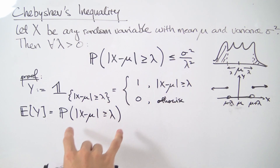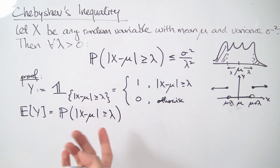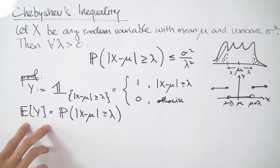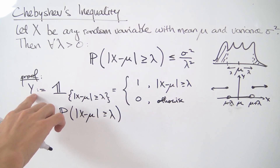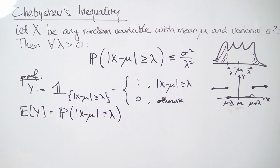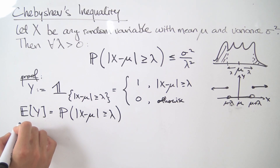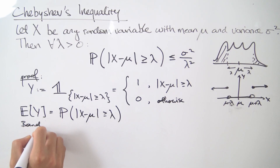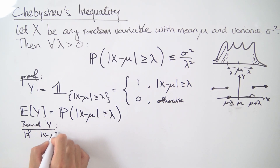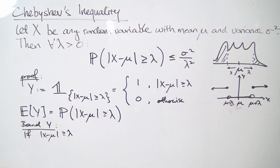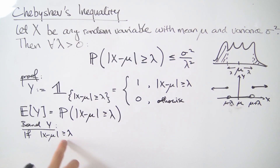So what we want to do is bound this probability, which means we equivalently need to find a bound for the expectation of Y. We can do this by taking a look at our random variable Y and finding upper bounds for it. We'll do this by cases. First case: if the absolute value of X minus mu is greater than or equal to lambda, we can divide both sides by lambda, leaving us with 1 on the right-hand side.